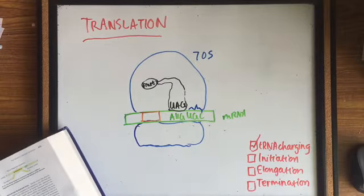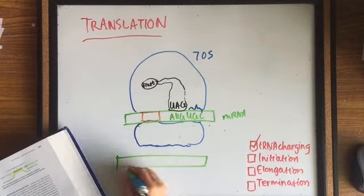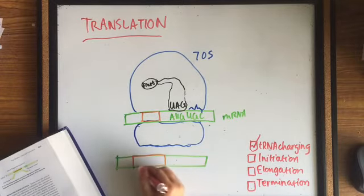The Shine-Dalgarno consensus sequence in mRNA is required for the attachment of the small subunit of the ribosome. This is initiation in bacteria.